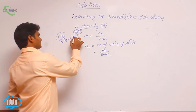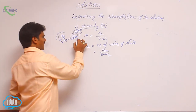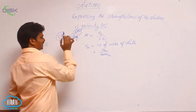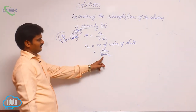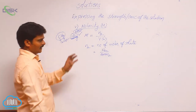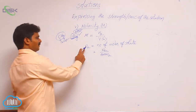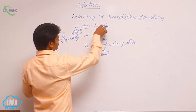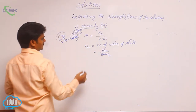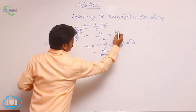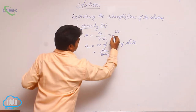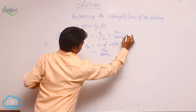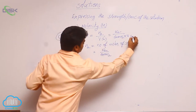Gram molecular weight means molecular weight expressed in grams. It is the weight of solute — one term used to calculate number of moles. If you substitute in that, you will get W2 by gram molecular weight 2 into volume. Here volume must be in liters.